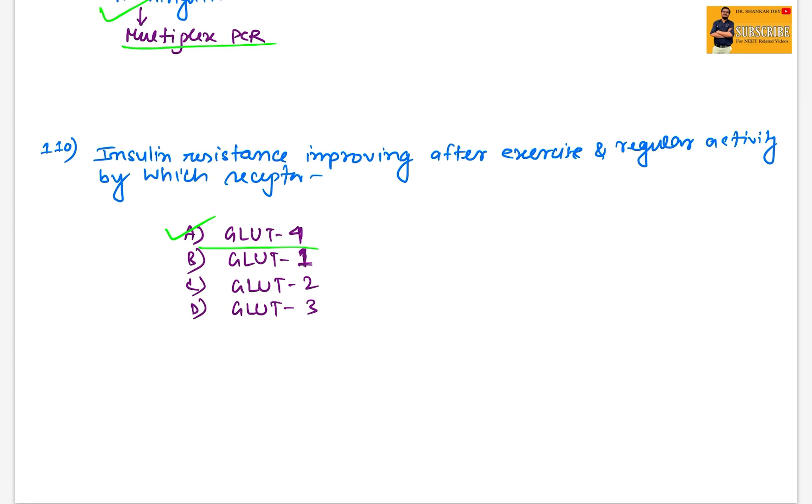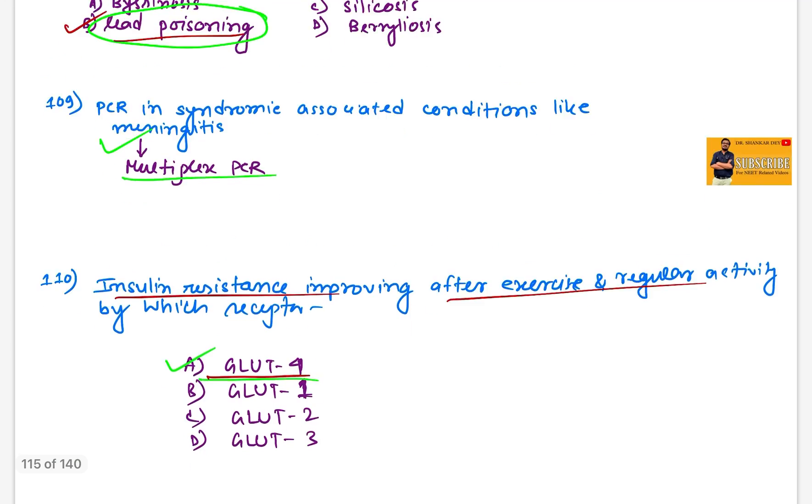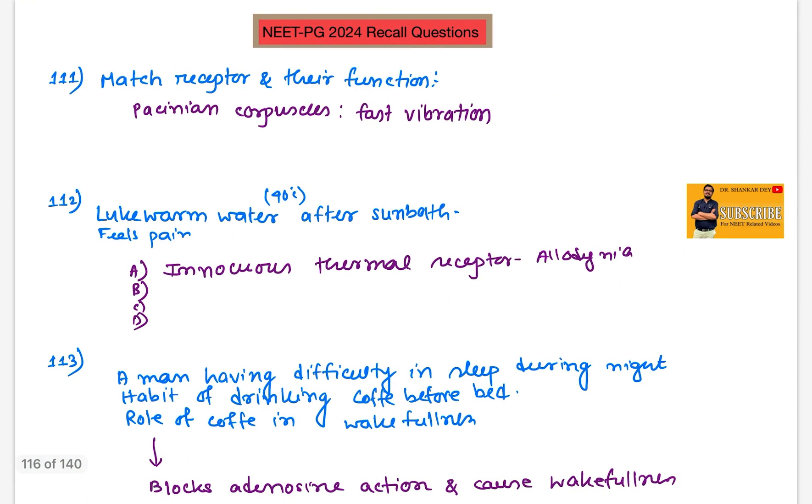Question 109: PCR in syndromic associated conditions like meningitis - this will be multiplex PCR. Question 110: Insulin resistance improving after exercise and regular activity. It is obviously GLUT-4 presented in muscle, so this GLUT-4 helps to improve insulin resistance with exercise and regular activity.